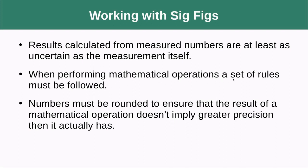When performing mathematical operations, a set of rules must be followed because we can't wind up with numbers that indicate a higher level of precision than we actually had when we made our measurement. And you can definitely do that just as an artifact of the way that we do math. Numbers must be rounded to ensure that the result of a mathematical operation doesn't imply greater precision than it actually has.